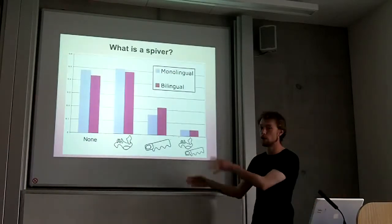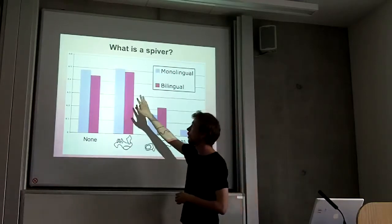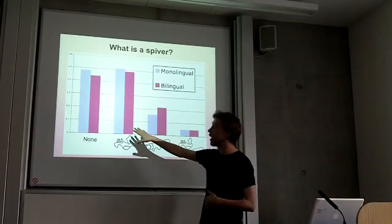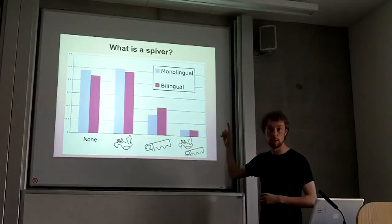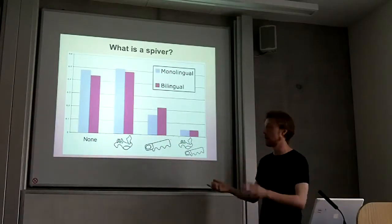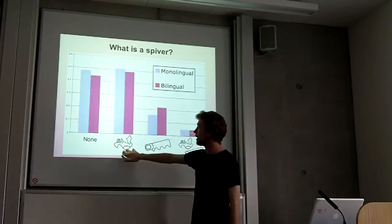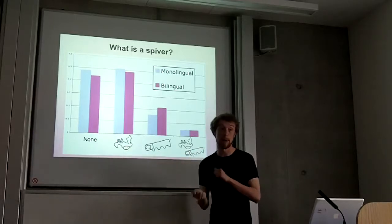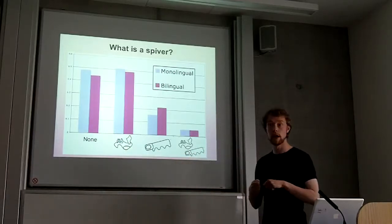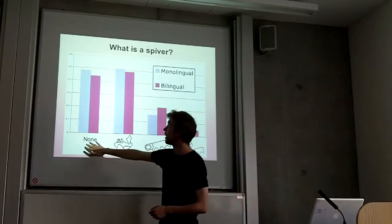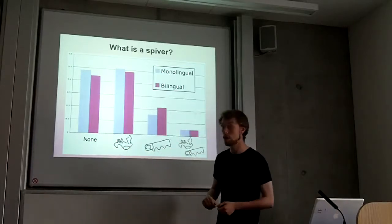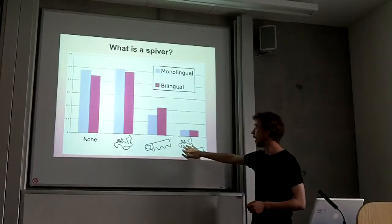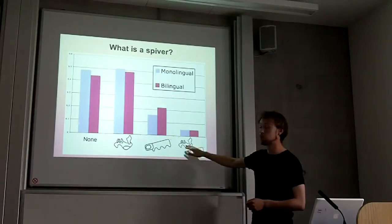So this is a graph of the results. If we focus on the monolingual first — these are the blue columns — these are the relative probabilities of what the model thinks the word 'spiver' relates to. The most likely thing is the object it hasn't seen before, which matches with the mutually exclusive behavior we see in real children. After that, it assumes that spiver doesn't refer to any of the objects in the scene, then to an object it's seen, and lastly to both an object it's seen and an object it hasn't seen.